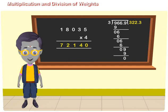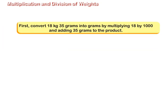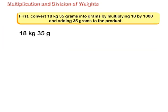Multiplication and Division of Weights by Conversion. The weight of a bag is 18 kilograms 35 grams. Find the weight of 4 bags. First, convert 18 kilograms 35 grams into grams by multiplying 18 by 1000 and adding 35 grams to the product. So, 18 kilograms 35 grams is equal to 18,035 grams.